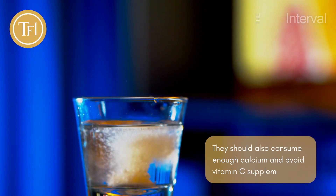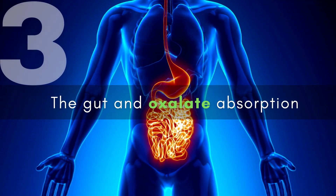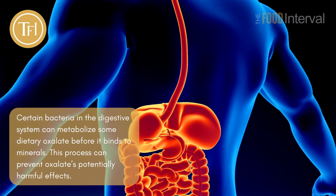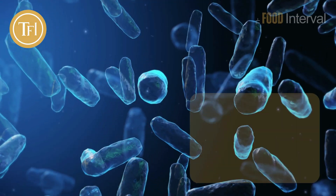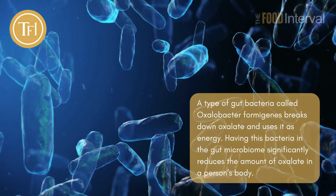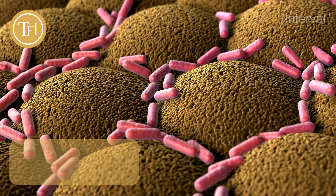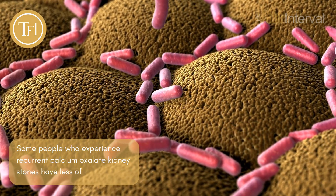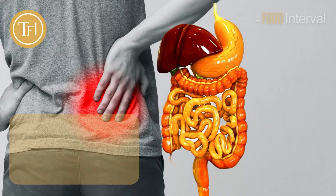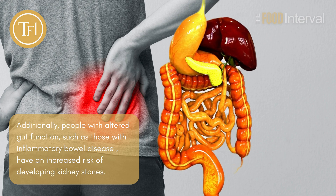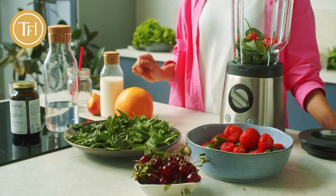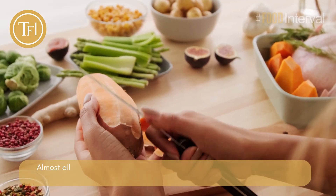If a person is prone to developing kidney stones, their doctor may advise them to reduce their intake of oxalate-rich foods, consume enough calcium, and avoid vitamin C supplements. Chapter 3: The gut and oxalate absorption. Certain bacteria in the digestive system can metabolize some dietary oxalate before it binds to minerals. A type of gut bacteria called Oxalobacter formigenes breaks down oxalate and uses it as energy, significantly reducing the amount of oxalate in a person's body. Some people who experience recurrent calcium oxalate kidney stones have less of this bacteria. Factors such as taking antibiotics can reduce good gut bacteria, and people with inflammatory bowel disease have an increased risk of developing kidney stones.